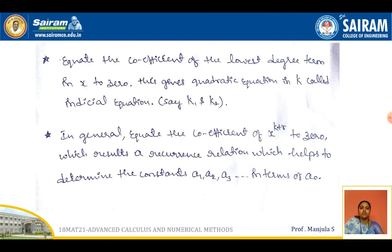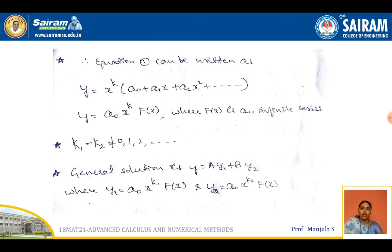With the help of the recurrence relation, we can find the values of the constants a1, a2, a3 in terms of a0. After getting all these constant values, we substitute into equation number 1, so y can be written as x^k (a0 + a1 x + a2 x² + ...) and on simplification as a0 x^k f(x), where f(x) represents the infinite series. Remember, the difference between the obtained roots should not be 0, 1, 2 — it should not be a whole number.